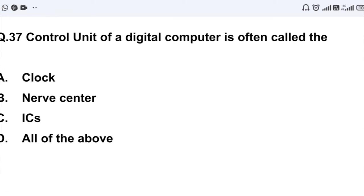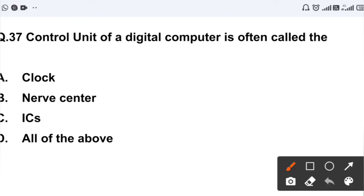Question number 37: Control unit of a digital computer is often called - Option A: clock. Option B: nerve center. Option C: IC. Option D: all of the above. So the answer will be nerve center. The control unit of a computer is called nerve center. Option B, correct.